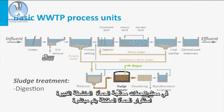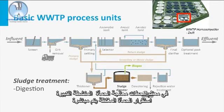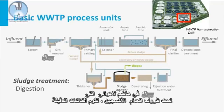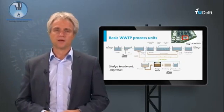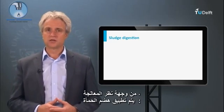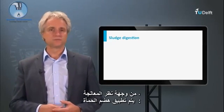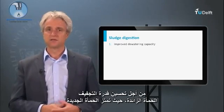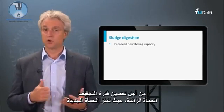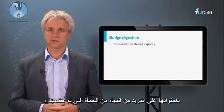In most large activated sludge treatment plants, stabilization of the thickened sludge is performed in an anaerobic digester, in which, under oxygen-free conditions, microorganisms break down the sludge particles to their mineral components, producing biogas. From the process point of view, sludge digestion is implemented to improve the dewatering capacity of the excess sludge, since fresh sludge absorbs more water than digested sludge.